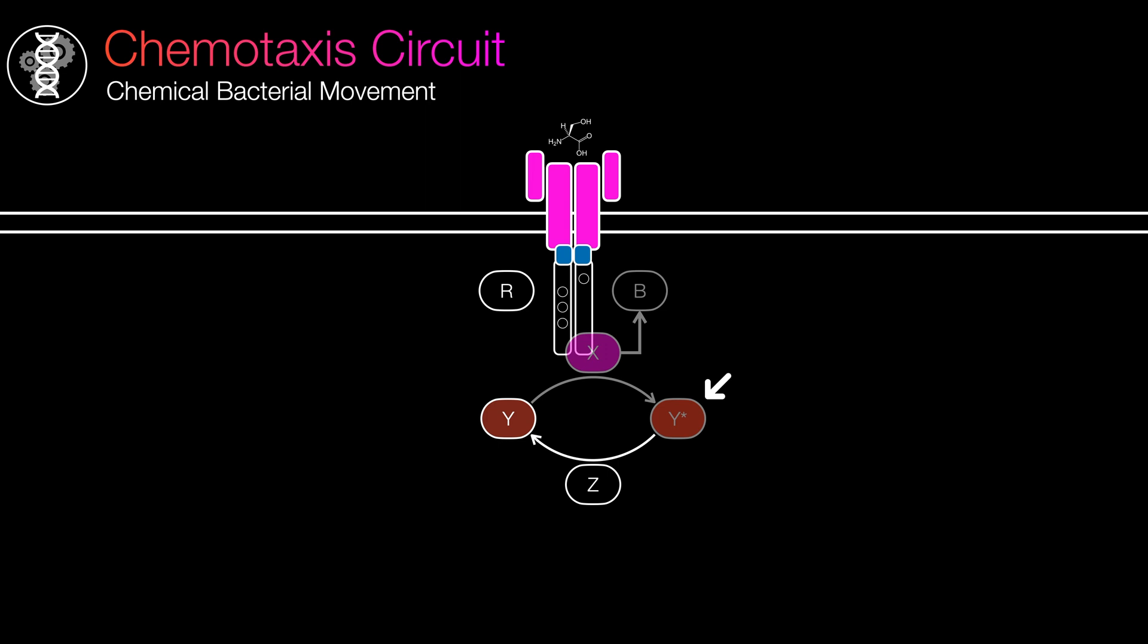With no mechanism to remove the methyl groups, R continues to add more, decreasing the sensor's sensitivity and promoting further X activation. The increased X activation leads to more Y activation, causing the cell to tumble more frequently. And it is this intricate interplay of these components that generates the exact adaptation response we observed earlier.